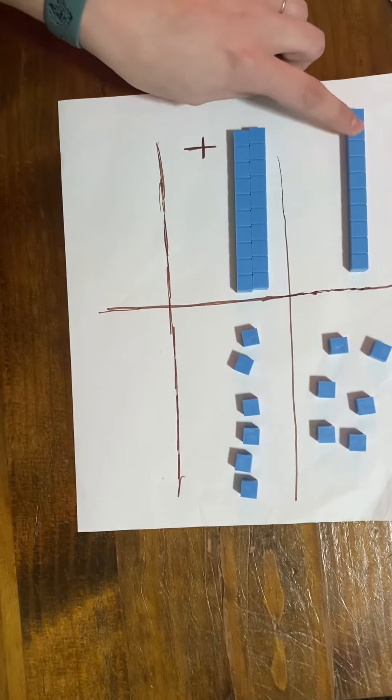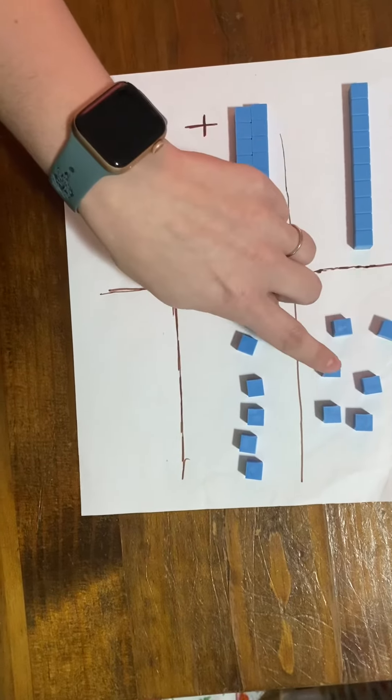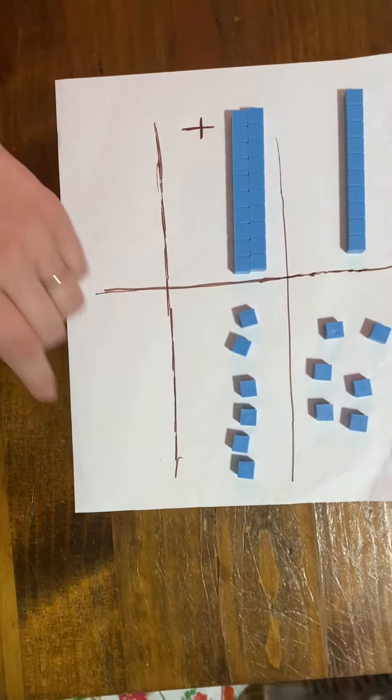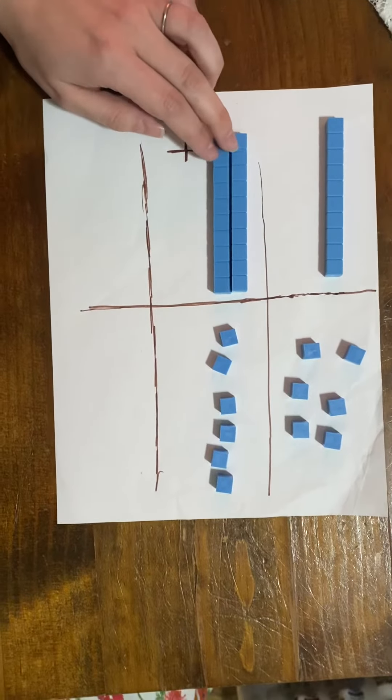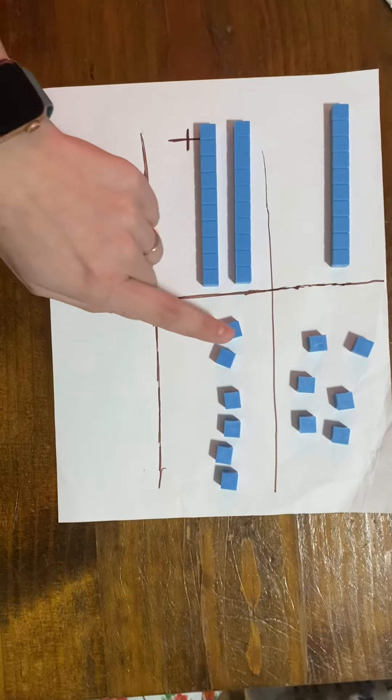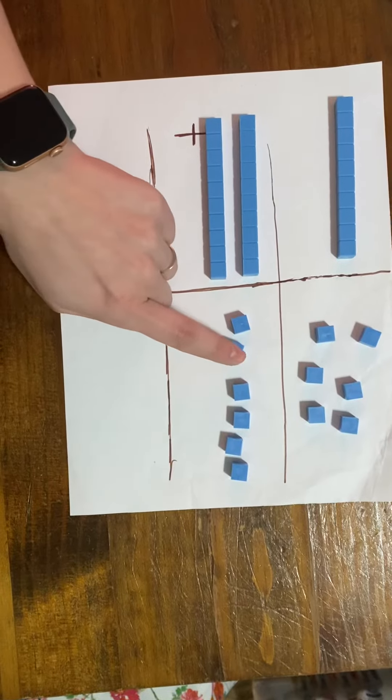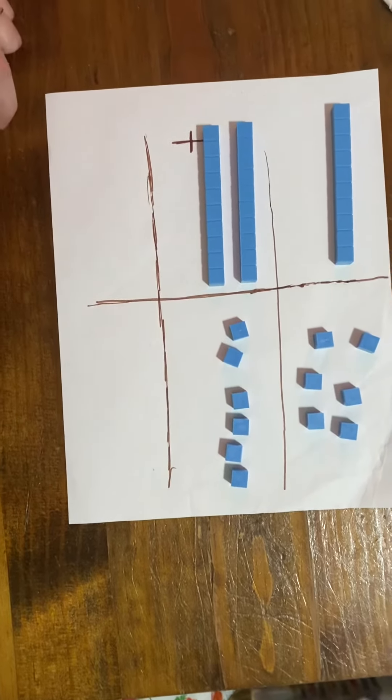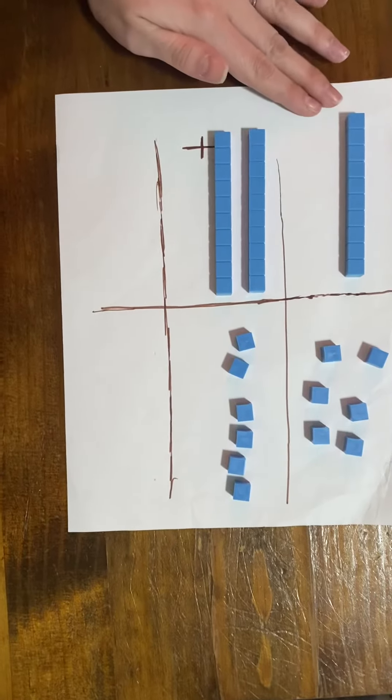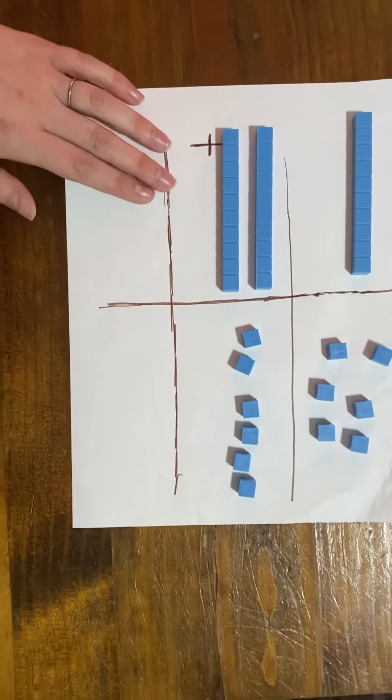So this number would be 10, 11, 12, 13, 14, 15, 16. And this number would be 10, 20, 21, 22, 23, 24, 25, 26. So here we're adding 16 plus 26.